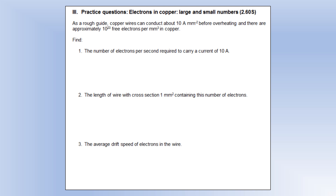In this video we're going to take a look at some introduction to electricity type questions. Starting off as a rough guide, copper wires can conduct about 10 amps per millimetre squared — that's their cross-sectional area — before they overheat, and there are approximately 10 to the 23 electrons per millimetre cubed in copper.